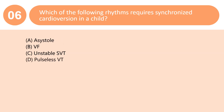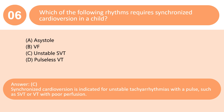Which of the following rhythms requires synchronized cardioversion in a child? A. Asystole. B. VF. C. Unstable SVT. D. Pulseless VT. Answer: C. Synchronized cardioversion is indicated for unstable tachyarrhythmias with a pulse, such as SVT or VT with poor perfusion.